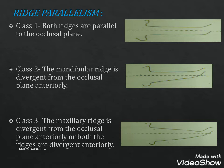For ridge parallelism, in Class 1 both ridges are parallel to the occlusal plane. In Class 2 the mandibular ridge is divergent from the occlusal plane anteriorly. In Class 3 the maxillary ridge is divergent from the occlusal plane anteriorly, or both ridges are divergent anteriorly. Ridges that are not parallel to each other will cause movement of the denture base when teeth occlude due to unfavorable direction of forces.